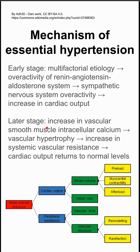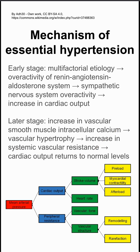In the later stages of hypertension, you'll have an increase in vascular smooth muscle intracellular calcium, which leads to vascular hypertrophy and increases in your systemic vascular resistance. So your blood vessels are responding to the higher cardiac output, and this normalizes your cardiac output back to normal levels — but the difference is that the pressure is higher because you have this increase in systemic vascular resistance.